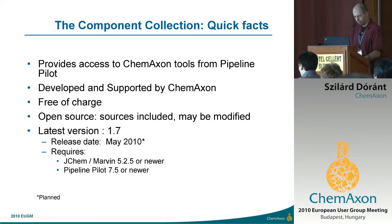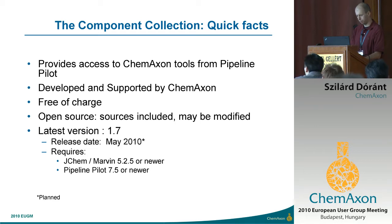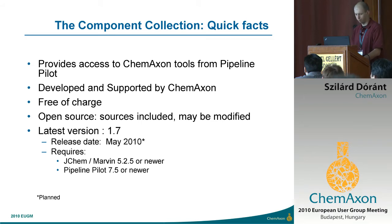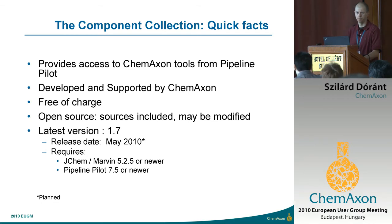The latest version will be 1.7, hopefully in a week or two. It's planned to release this May. And from this version, we will require JChem and Marvin versions 5.2.5, which is quite backward compatible. And for the first time, Pipeline Pilot 7.5, which I think is pretty widespread now everywhere.